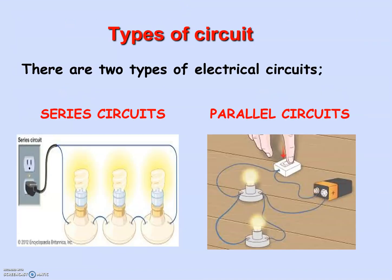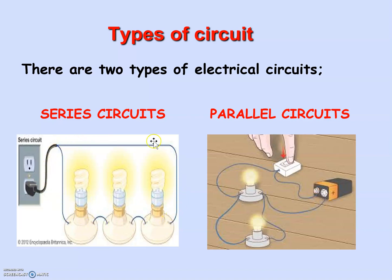So two types of circuits: series and parallel. If you look at this circuit, it is a series circuit, which means that all of the components are connected one after another. So if you look here, this is connected to the bulb, then the next bulb, and then you have a connecting wire that is connected to the main power supply, so each of these are connected end to end.